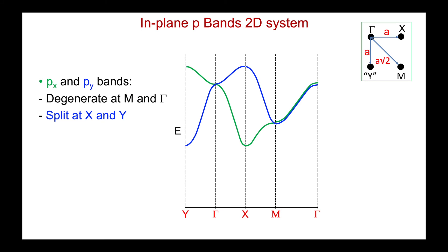Now let's plot the px and the py bands on the same diagram. They're degenerate everywhere except the x- and y-points. The gamma-point energies and m-point energies for both bands are the same. The only difference is that the x point is the lowest energy for the px band and the highest energy for the py band, while the y point is the lowest energy for the py band. So we lose the degeneracy of the orbitals as we go towards x and towards y — they become singly degenerate.